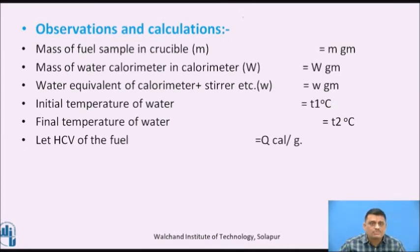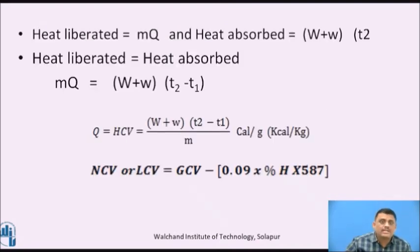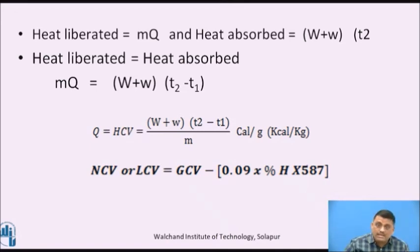Observations: mass of fuel sample taken is expressed as M grams; mass of water taken in copper calorimeter is capital W grams; water equivalent due to stirrer etc. is small w grams; initial temperature of water is T1 °C; final temperature of water is T2 °C; and HCV of the fuel is Q calorie per gram. Heat liberated equals M×Q and heat absorbed equals (W + w)(T2 - T1). Since heat liberated equals heat absorbed: MQ = (W + w)(T2 - T1). Therefore, Q (HCV) = (W + w)(T2 - T1) / M, with units of calorie per gram or kilocalorie per kg, depending on the units used for water weight and fuel weight.